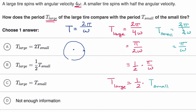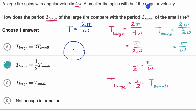It's always nice, if you have time, to think about whether that makes sense. The large tire spins with angular velocity four omega and the smaller tire spins with half that angular velocity. If it has half the angular velocity, it's rotating half as fast, so it would take twice as long to complete one cycle. So the small tire takes twice as long, or the large tire takes half as long as the small tire. That makes sense.